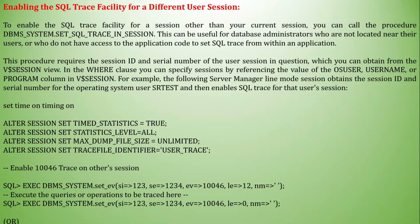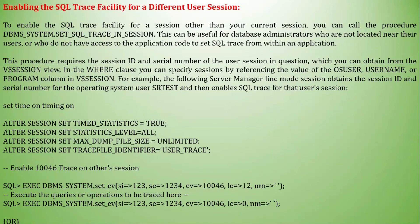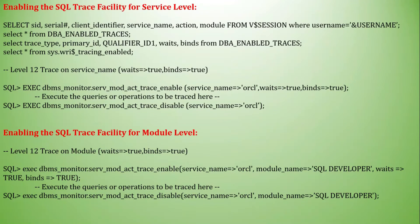To enable the SQL Trace Facility for a session other than your current session, you can call the procedure DBMS_SYSTEM.SET_SQL_TRACE_IN_SESSION. This can be useful for database administrators who are not located near their users or who do not have access to the application code to set SQL Trace from within an application. This procedure requires the session ID and serial number of the user session, which you can obtain from the V$SESSION view.